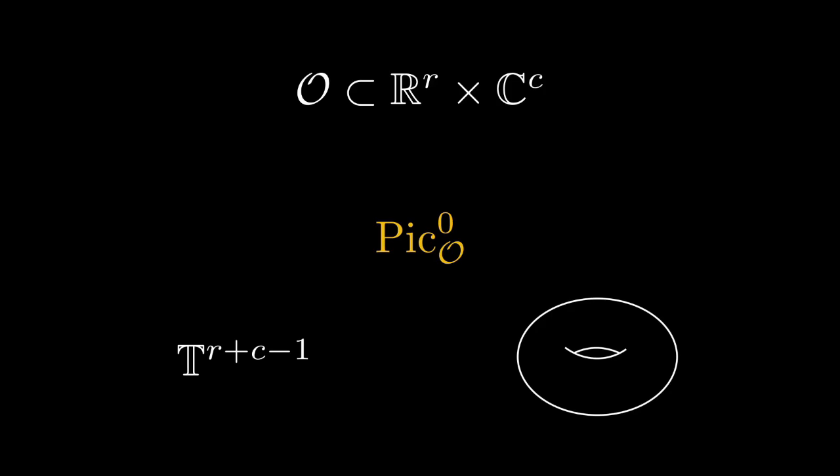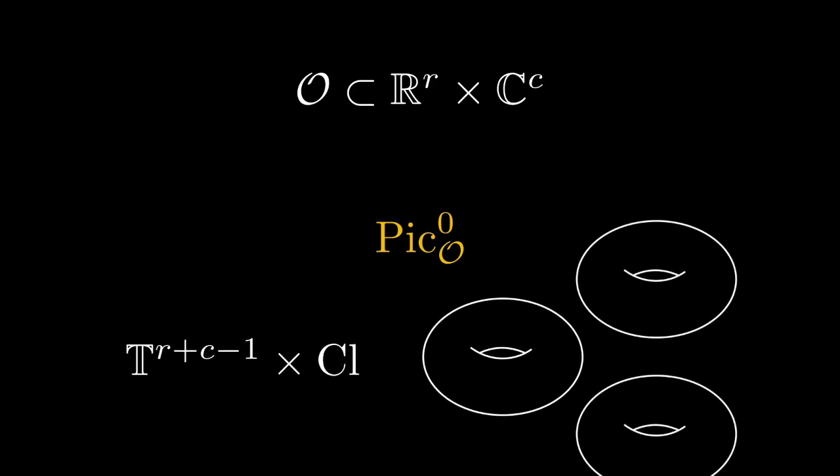If we remove the principal ideal property, that means if we do have a non-trivial ideal class group, things get slightly more involved. In this case we get many copies of the torus, as many as there are class group elements. I want to stress here that this direct product of the torus and the class group is only meant in a topological way. The underlying group structure is not a direct product.